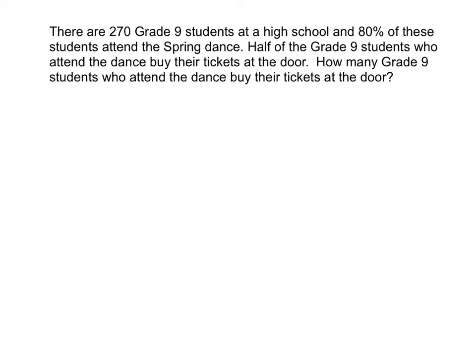So let's start by underlining some information that we're told. All together, how many grade 9 students are there at this high school? There are 270 grade 9 students all together. What percentage of these students attended the spring dance? It tells us that 80% of these students attend the dance. We know that half of these students who attended the dance buy their tickets at the door, which means the other half probably bought them in advance. The question asks us to find how many grade 9 students who attend the dance buy their tickets at the door.